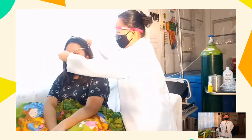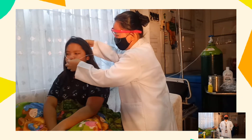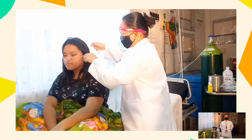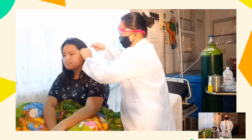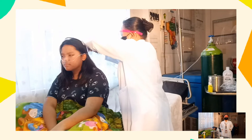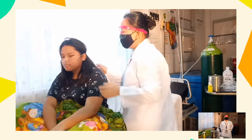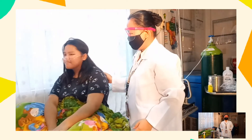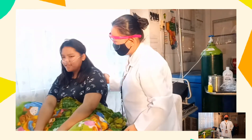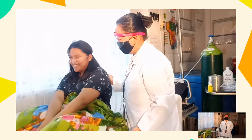Place the prongs in the patient's nostrils. Place tubing over and behind each ear with the adjuster comfortably under the chin. Alternatively, the tubing may be placed around the patient's head with the adjuster at the back or base of the head. Place gauze pads at the ear beneath the tubing as necessary.